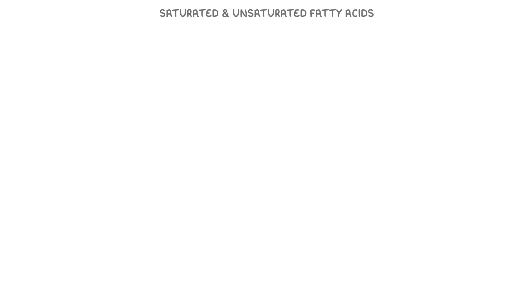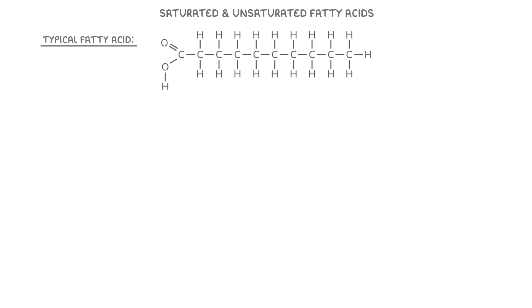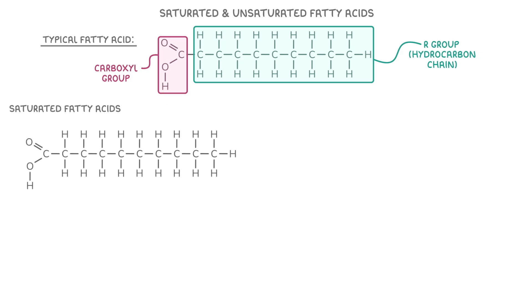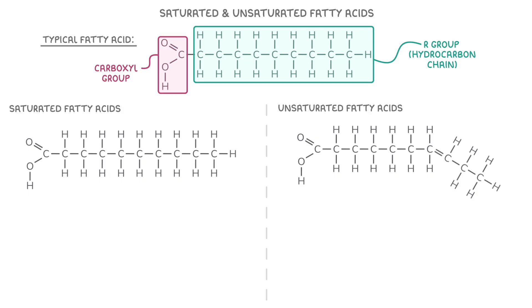Next, let's explore the differences between saturated and unsaturated fatty acids. To do this, we first need to know about the structure of a typical fatty acid found in a lipid. Fatty acids consist of a carboxyl group, which is COOH, attached to an R group, which is a hydrocarbon chain. This can vary in length and structure depending on the fatty acid. Now let's compare these hydrocarbon chains in saturated and unsaturated fatty acids and see how these differences affect their properties.